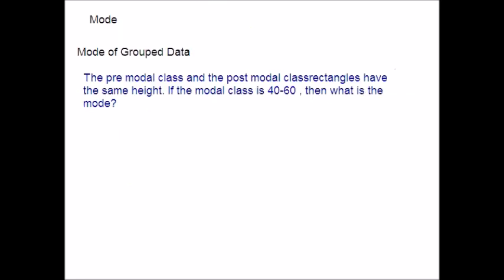Now, let me take an example and explain you how to find the mode when the data is grouped. Here is an example. Please read the question once. The pre-modal class and the post-modal class rectangles have the same height. If the modal class is between 40 to 60, then what is the mode? So, please take down the given information from the question. The modal class has given us 40 to 60. So, the lower limit is 40 and upper limit is 60. H is nothing but the width of the lower limit and upper limit. So, what is the difference between these two? 60 minus 40 is 20. Therefore, height H is equal to 20.